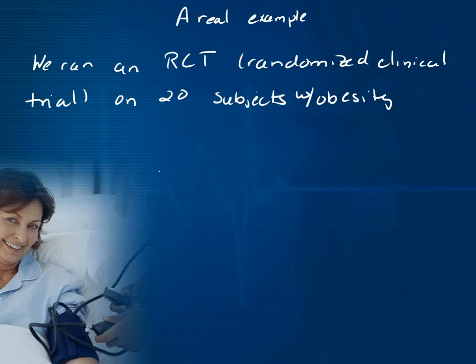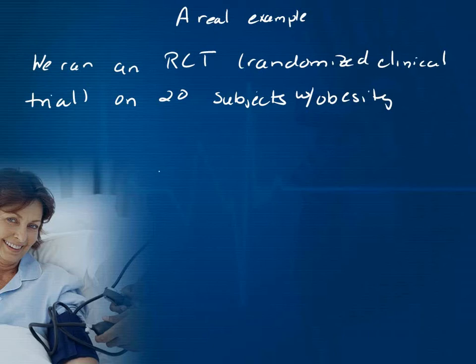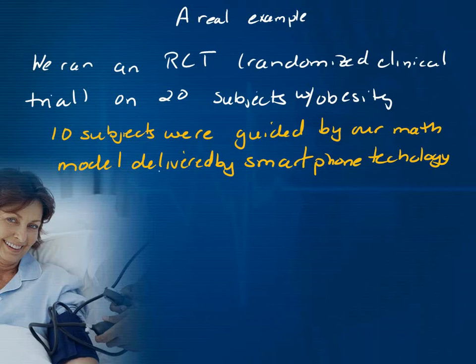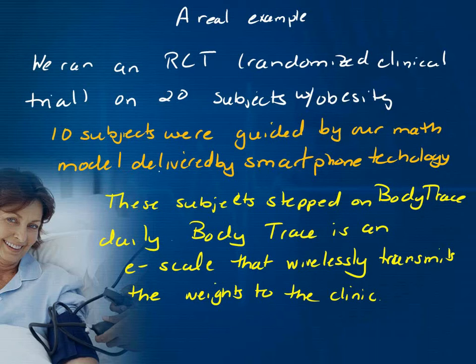I wanted to show you a real example. We ran a randomized control trial — I ran the math, I didn't actually touch the humans — on 20 subjects with obesity. Ten of those subjects were guided by their weight loss using a mathematical model programmed to a smartphone. They were never seen in the clinic; they wore sensors and gadgets, and stepped on a scale called Body Trace that automatically wirelessly sends up your weight. I integrated my math model with their body weight.